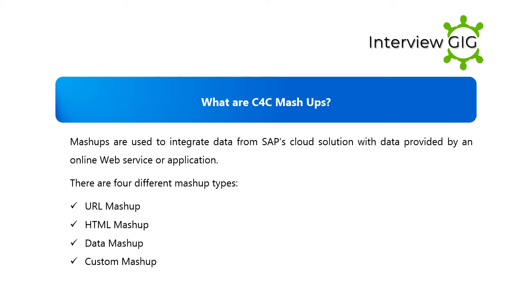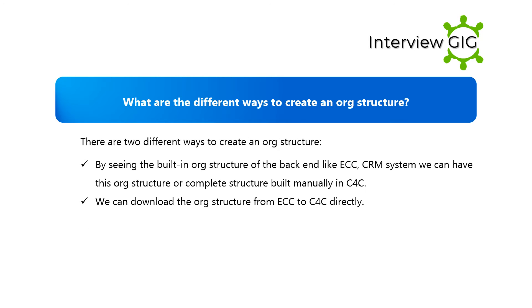What are C4C mashups? Mashups are used to integrate data from SAP's cloud solution with data provided by an online web service or application. There are four different mashup types: URL mashup, HTML mashup, data mashup, and custom mashup.